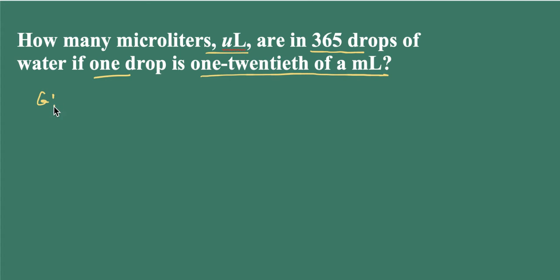So first thing we do is we write what we're given and that is 365 drops. And where do we need to go to? We're going to convert the 365 drops to our desired unit which is microliters. So we'll work on our roadmap here. We're going to go from drops to microliters.